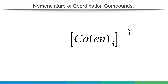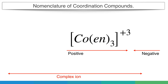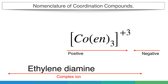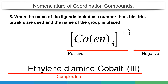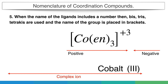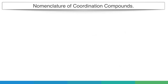For [Co(en)₃]³⁺, this is a positive complex ion only. Start with the ligand ethylenediamine, then the metal cobalt, then oxidation state +3. The number of ligands is 3, so we need to add 'tri'. But since the name of the ligand itself contains 'diamine', we use a different system: when the ligand name includes a number, we use bis, tris, tetrakis, with the ligand name in brackets. So it becomes tris(ethylenediamine)cobalt(III).